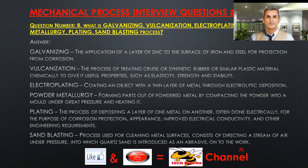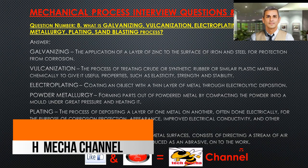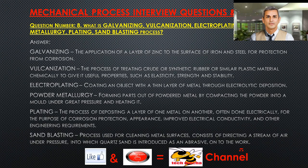Question number 8. What is galvanizing, vulcanization, electroplating, powder metallurgy, plating, and sandblasting process? Answer. Galvanizing: the application of a layer of zinc to the surface of iron and steel for protection from corrosion. Vulcanization: the process of treating crude or synthetic rubber or similar plastic material chemically to give it useful properties such as elasticity, strength, and stability. Electroplating: coating an object with a thin layer of metal through electrolytic deposition. Powder metallurgy: forming parts out of powdered metal by compacting the powder into a mold under great pressure and heating it.